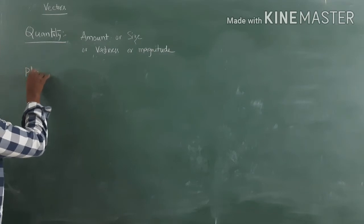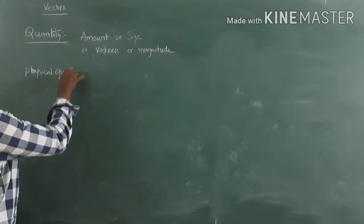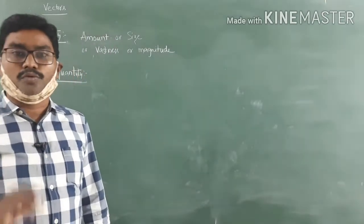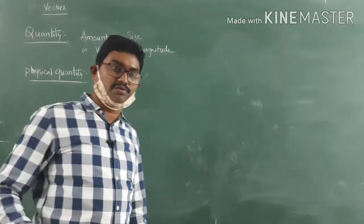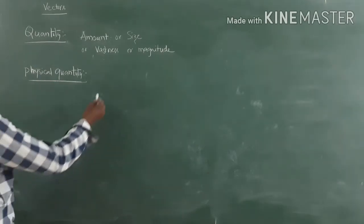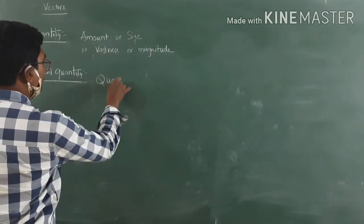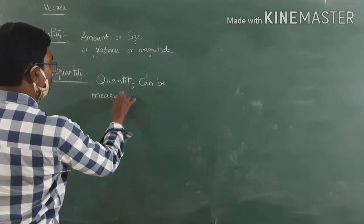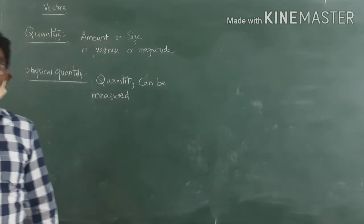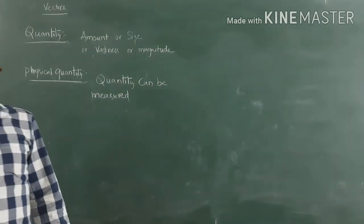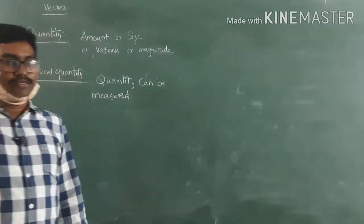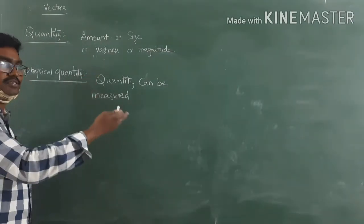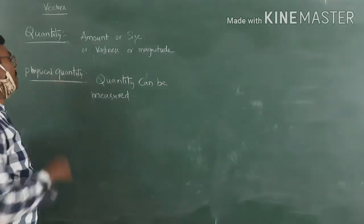Next, physical quantity. What is meant by physical quantity? A physical quantity is nothing but a quantity that can be measured. The quantity that can be measured is known as a physical quantity. Some quantities you cannot measure — for example, feelings. We cannot measure feelings. Physical quantities include distance, displacement, velocity, speed, acceleration, force — these all come under physical quantity.